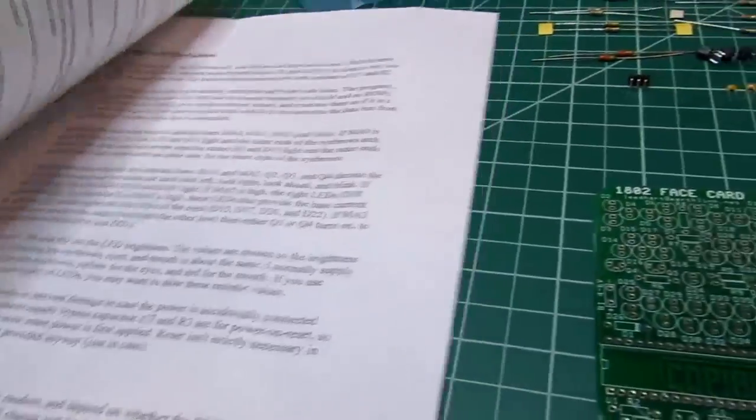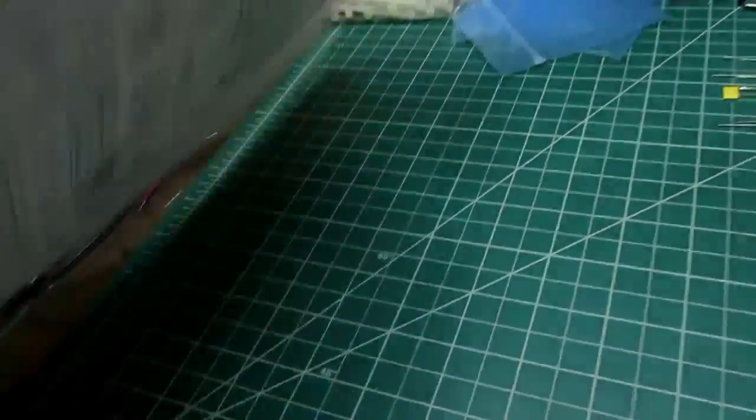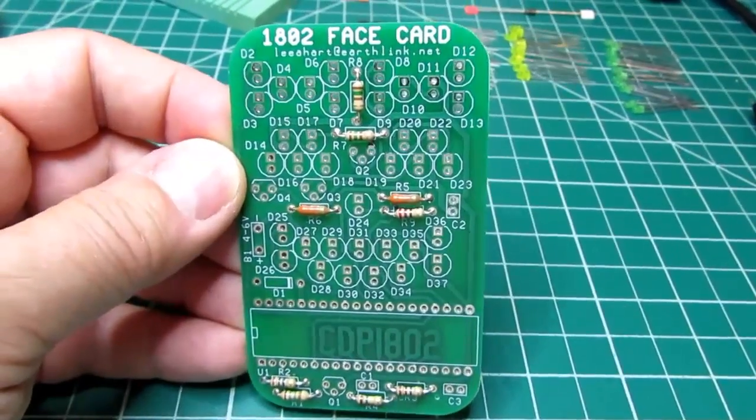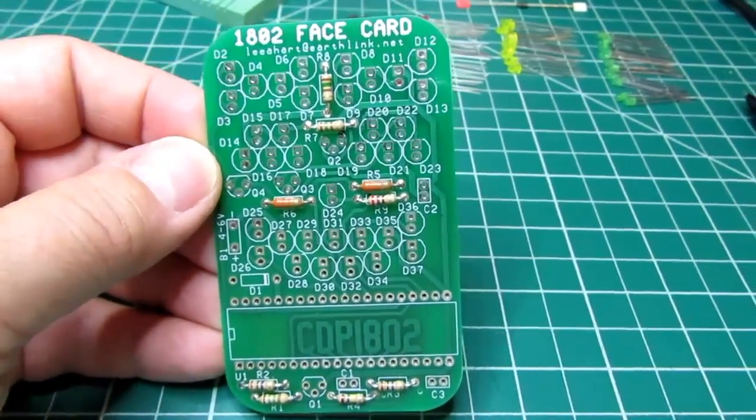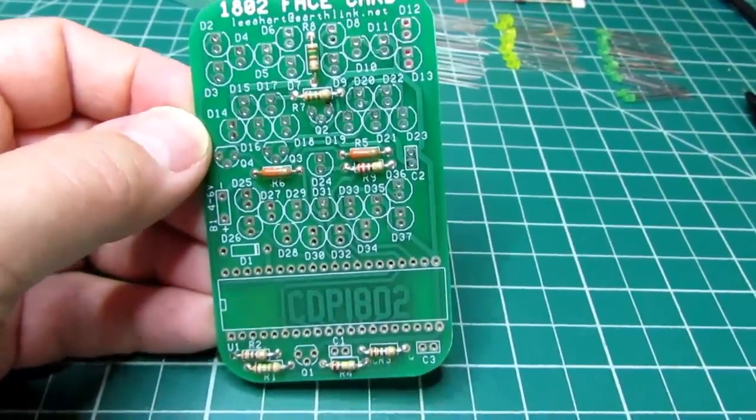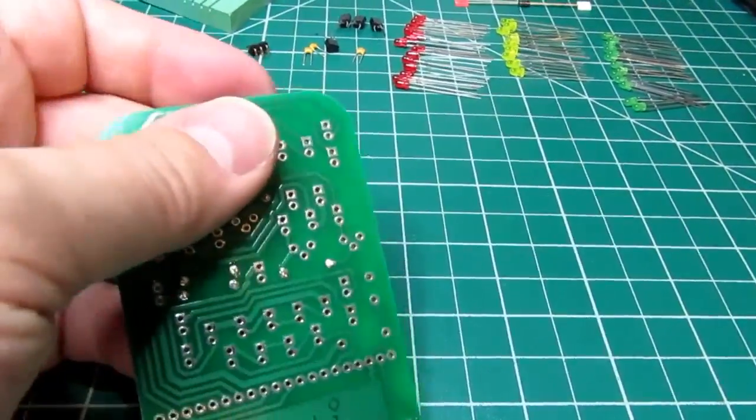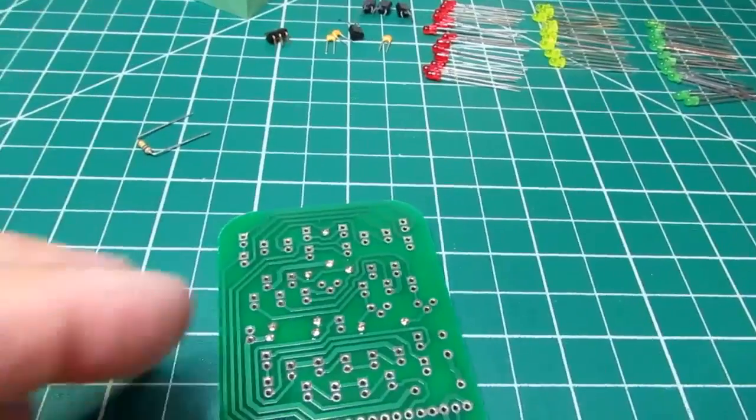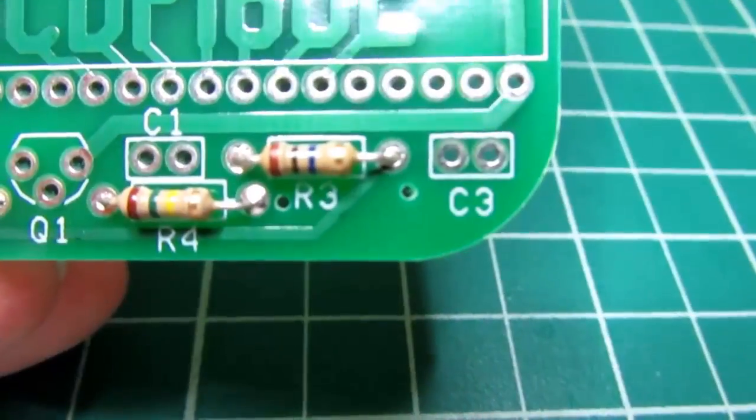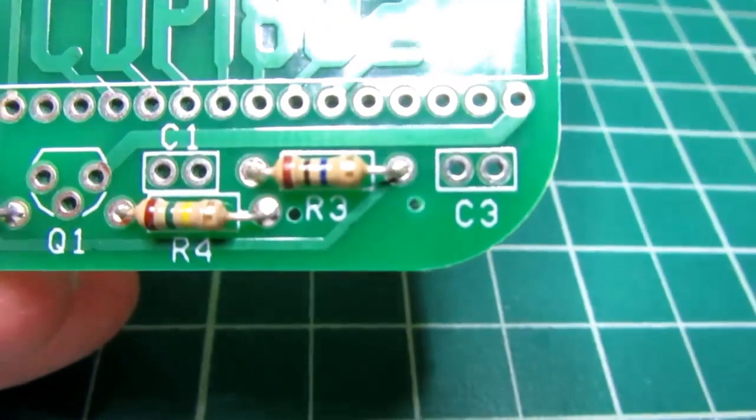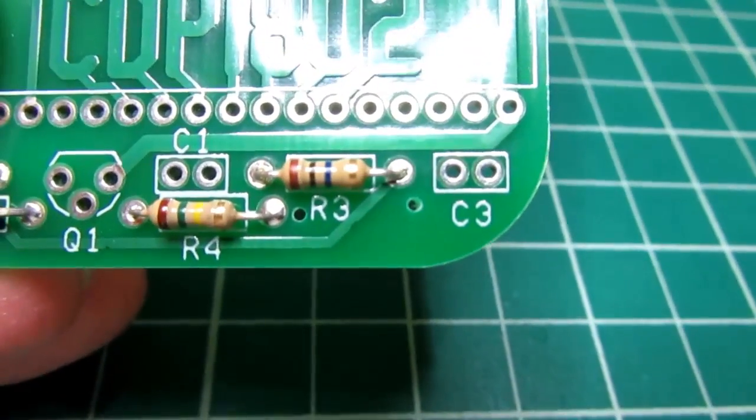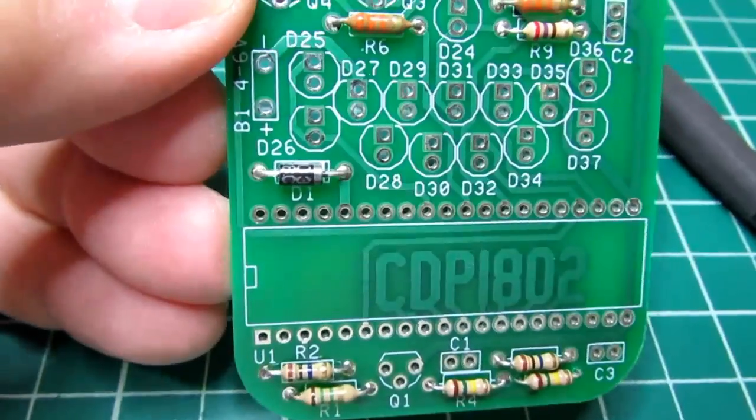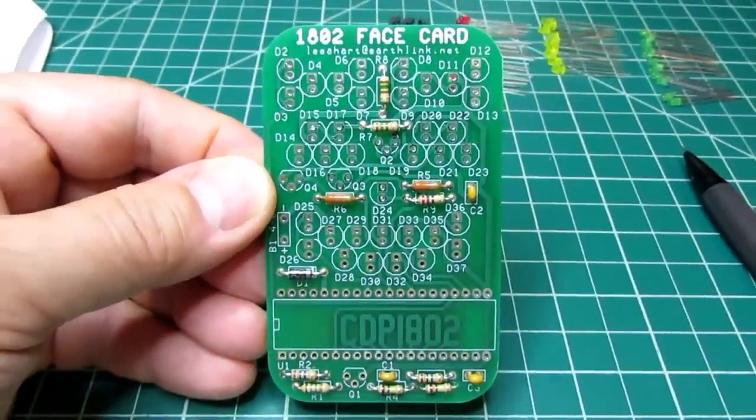First, all the resistors are installed, except for one. There's actually an error on this version of the circuit board. One additional resistor is provided which needs to be mounted in an unconventional way. Two holes have been drilled in the board which don't have pads on either side of the R3 designator, and that's where resistor 10 goes in. Then the diodes are installed.